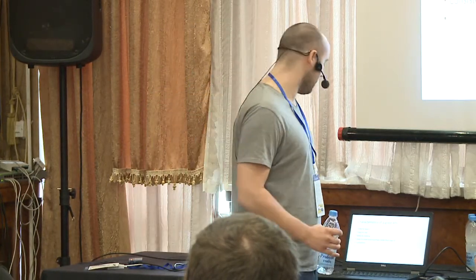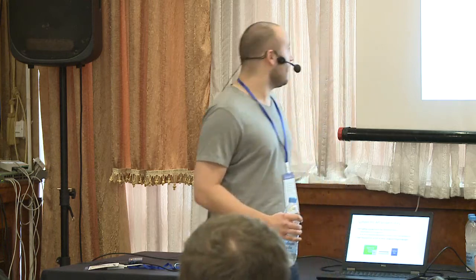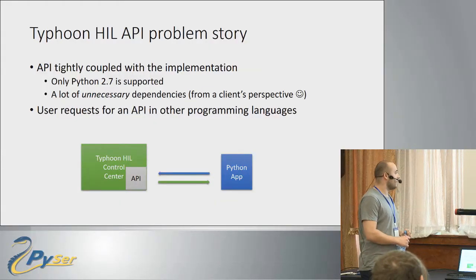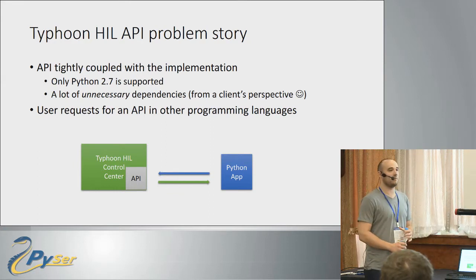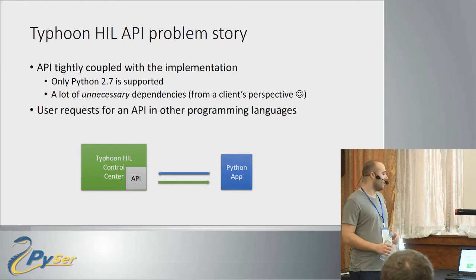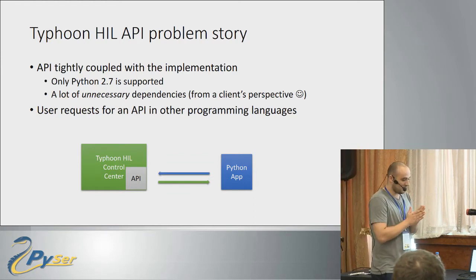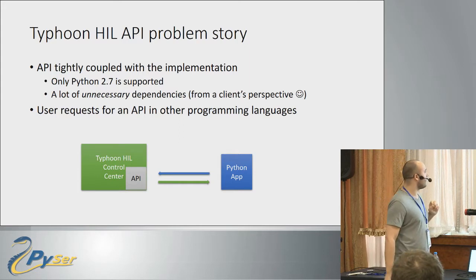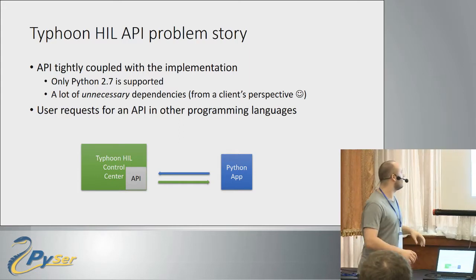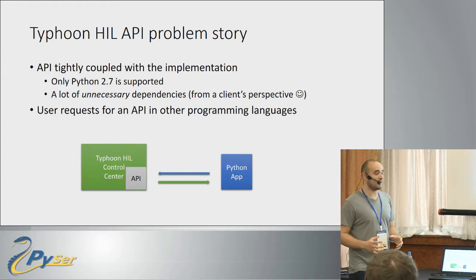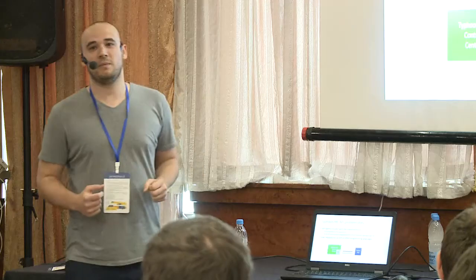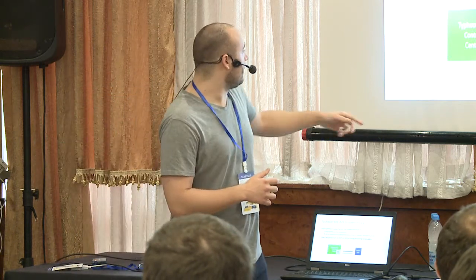Recently we had a really bad problem. Most of our software was written in Python 2.7 and the actual architecture was something like this: we had a large software with an API tightly integrated into it. They were really tightly coupled, which means we cannot change anything underneath the API because it will directly affect the clients.